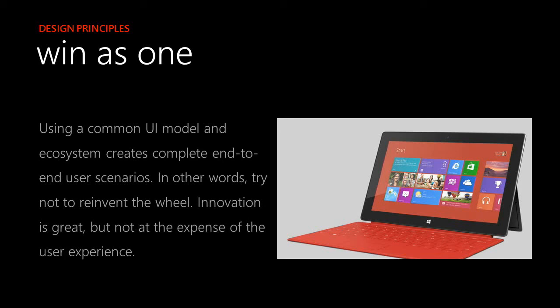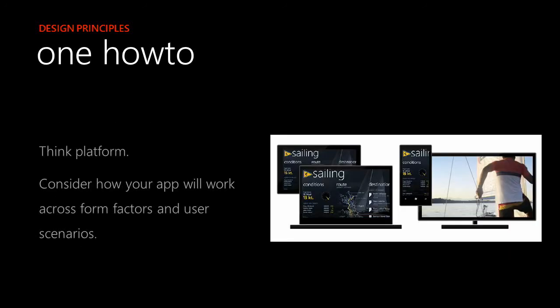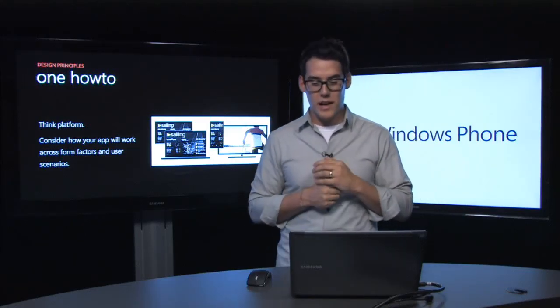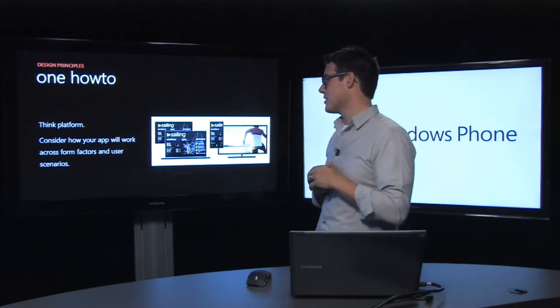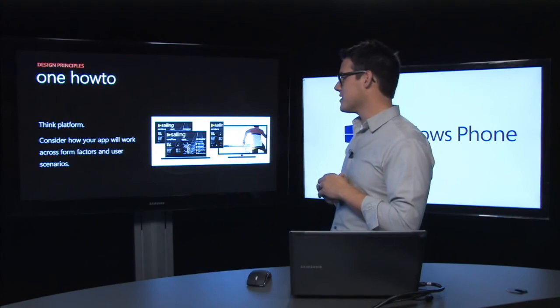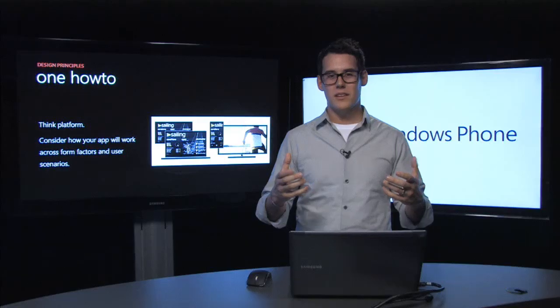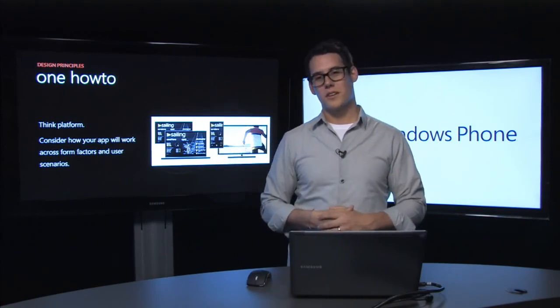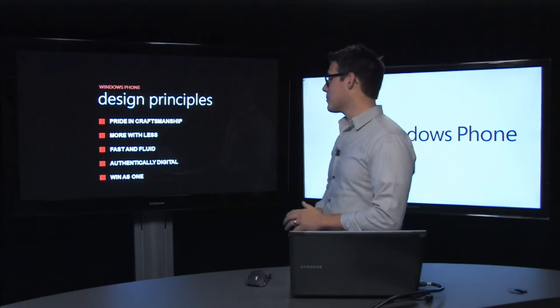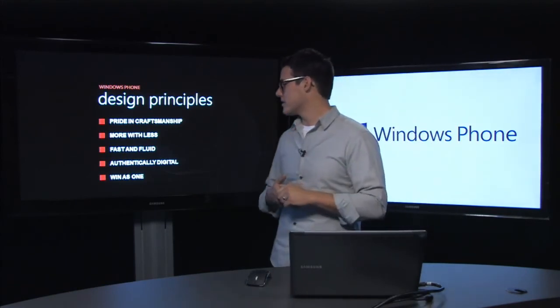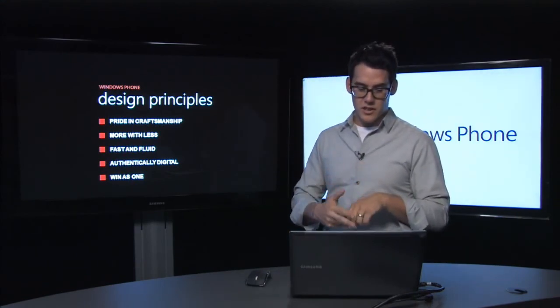Win as one: using a common UI model and ecosystem creates complete end-to-end user scenarios. In other words, try not to reinvent the wheel — innovation is great, but not at the expense of the user experience. Windows isn't just a phone — it has Xbox, Office, Bing, Outlook, SkyDrive, and pieces of Windows all on the mobile phone, and all these platforms are available for development. Think platform when creating a Windows Phone app. Consider how your app will work across users and scenarios — not only in the palm of your hand, but on a tablet, laptop, or even your Xbox screen in the living room. That wraps up the design principles: pride in craftsmanship, more with less, fast and fluid, authentically digital, and win as one.